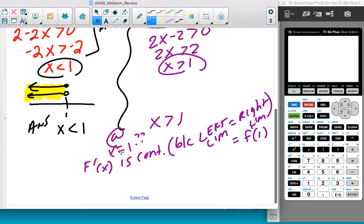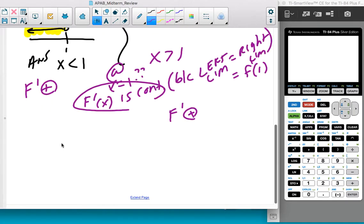this has to actually equal F prime of 1. So once we know it's differentiable, then it has to be continuous, which means that if F prime is positive on this interval, and it's positive on this interval, and it's continuous, it can't magically not be positive in between.